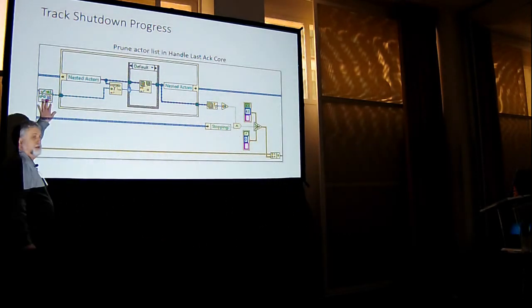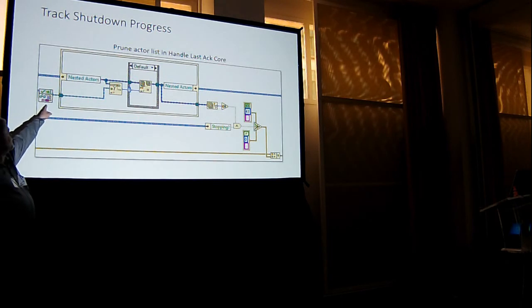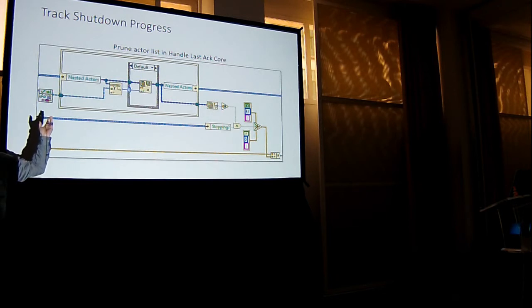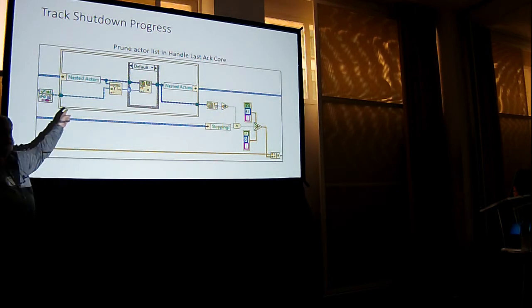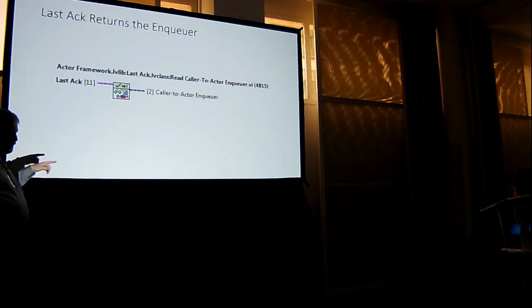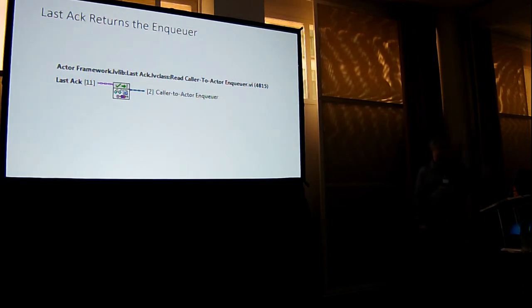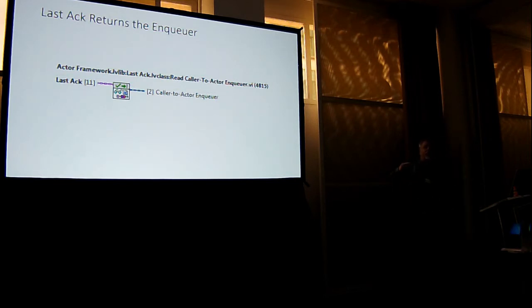How many of you know this trick: last ack returns the incure of a nested actor? This is last ack returns the incure — it's dead, it doesn't do anything, you can't send messages. But an incure in Actor Framework wraps LabVIEW queues, which are represented as four numbers, guaranteed to be unique for that one LabVIEW queue. Which means your incure is unique — it's a fingerprint. You can use it as the unique ID for the actor that just stopped. You don't have to add custom identifiers.